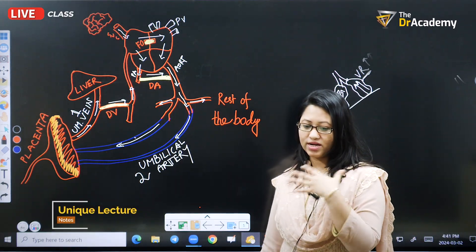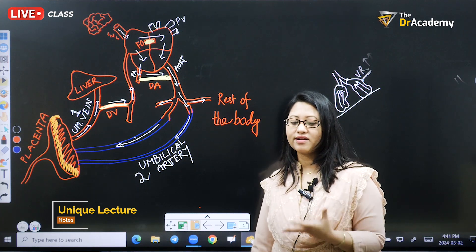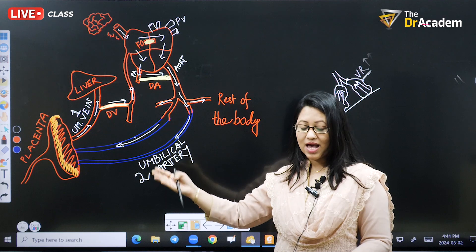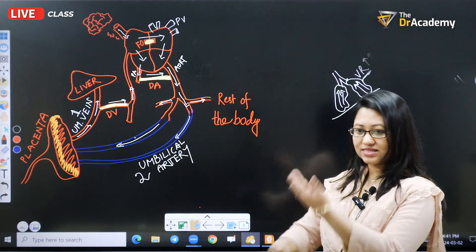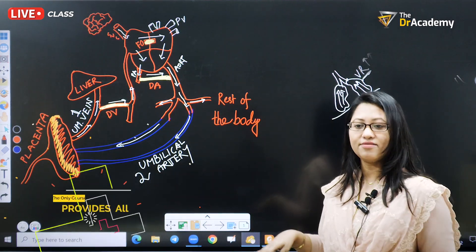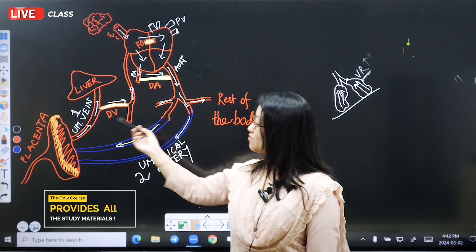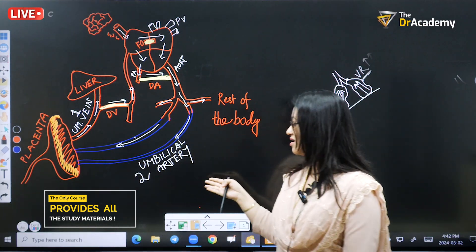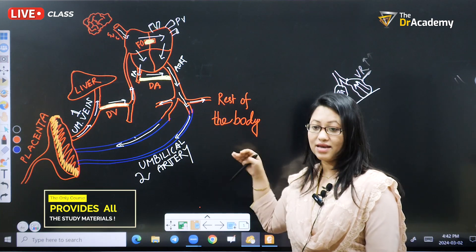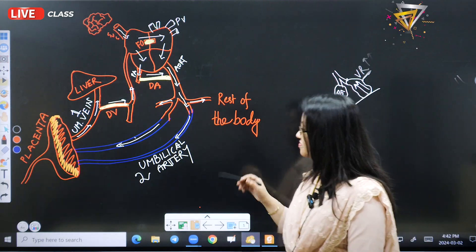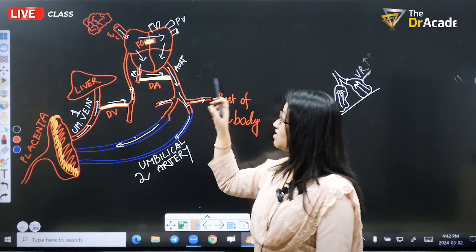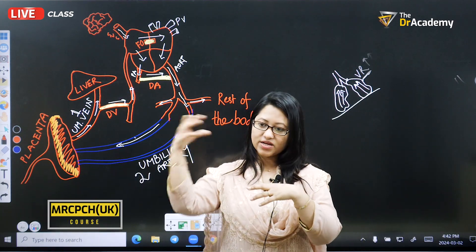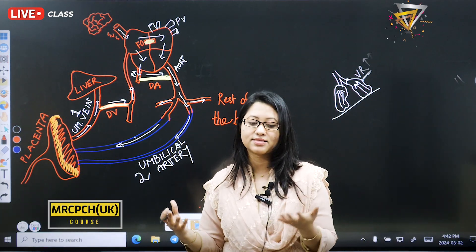In an adult body, arteries carry more oxygenated blood rather than the veins. But in case of the fetus, this is completely reversed. The umbilical vein carries more oxygenated blood and the umbilical artery carries less oxygenated blood. Since the fetal lung is not working, how does deoxygenated blood get oxygenated?